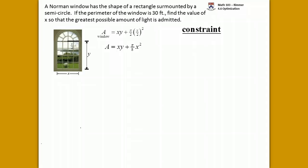The constraint is about the perimeter. The perimeter of the window is 30 feet. The perimeter is made of two different parts: the rectangular part, not all four, but just the three parts here, and then the semicircle part. For the rectangular part, we have x and a y and a y. For the semicircle part, we have half of the circumference. Circumference is 2 pi r. So 2 pi times x over 2, half of that. Cancel the 2's and we'll have pi over 2 x.